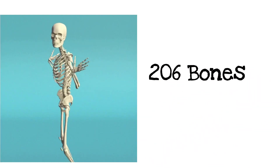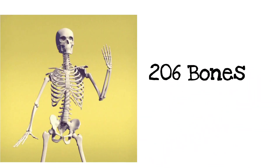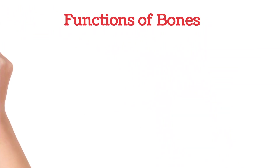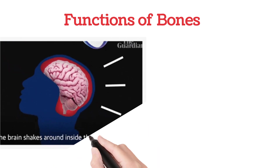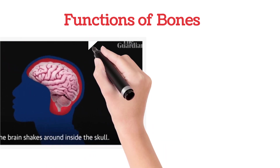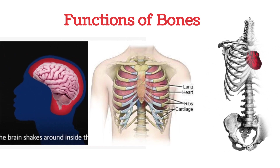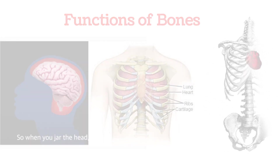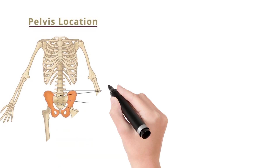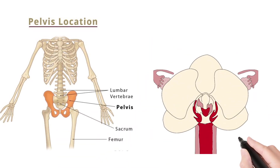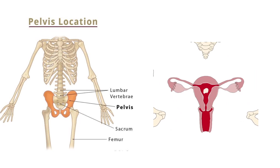There are many uses of bones. There are approximately 206 bones in the human body. The skull protects the brain, and the sternum and ribs form a rib cage which protects the heart as well as the lungs. The pelvis region supports and protects the kidneys, uterus, and reproductive organs.